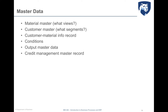In particular, master data, which are the second typology of data for fulfillment, include the material master — covering what views are established for the fulfillment process — the customer master, the customer material information record, and the credit management master record, as well as other distinctive fulfillment data like conditions and output.